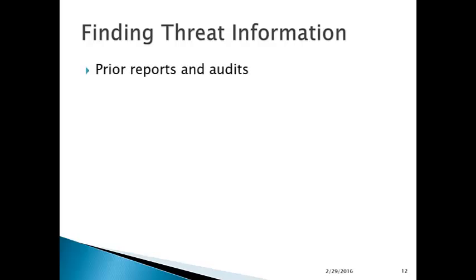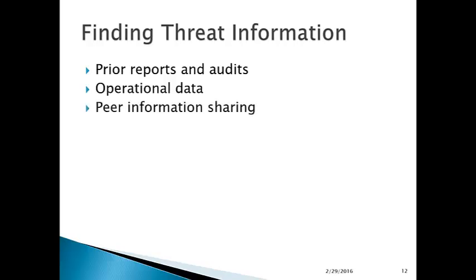Where do we find threat information? You can find it from prior reports and audits — there have been risk assessments, internal and external auditors, and assessments that may report on threats. There's operational data gathered through day-to-day operation of your network that may give you clues as to who is targeting your organization. There is peer information sharing — looking at folks in similar businesses and cooperating to share information about the common threat environment. And there's published research with general off-the-shelf documents that tell you what's going on.